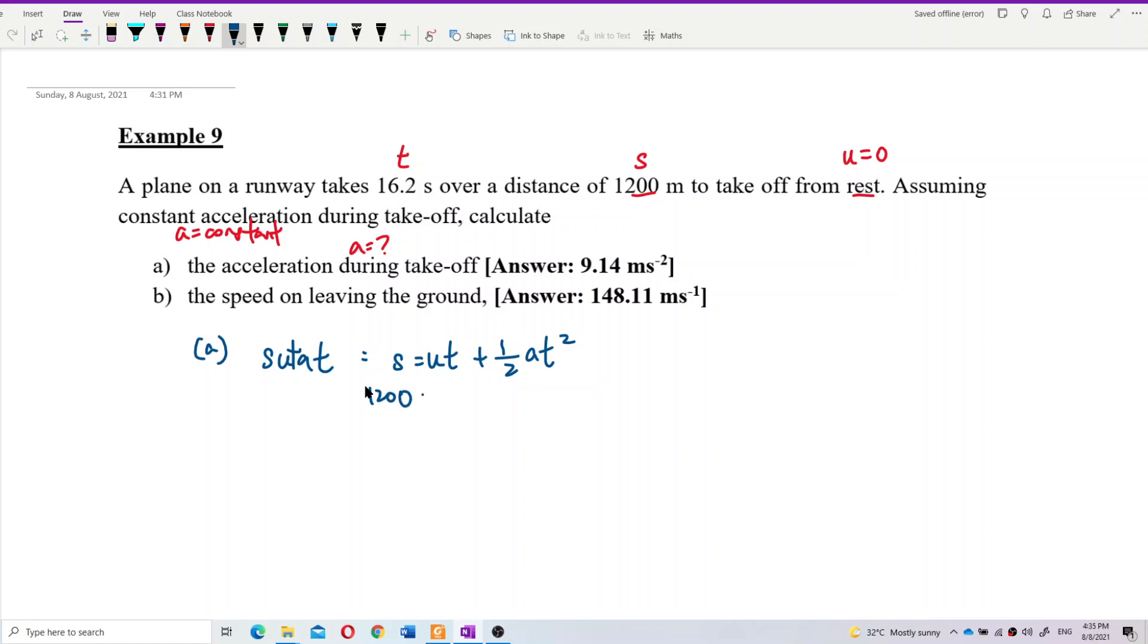So just substitute the information from rest. It starts from rest, so this is zero. And then, half A T square is 16.2. So what is our acceleration? Let's calculate. It is 9.14 meter per second square.